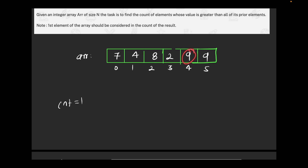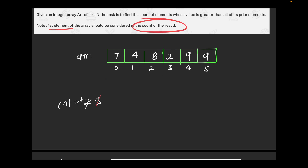If I go to 9, I can see that 9 is greater than all the elements towards its left, so the counter will increase again. They have also given that the first element of the array is always considered as an answer, so it becomes plus one as well. The final answer is four — we need to count elements whose all prior elements are smaller than it.